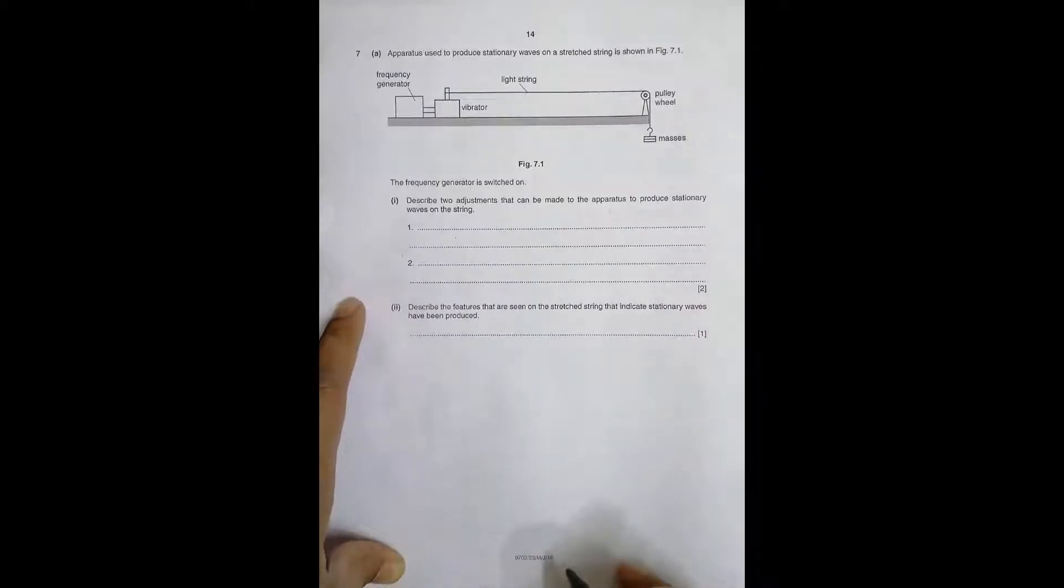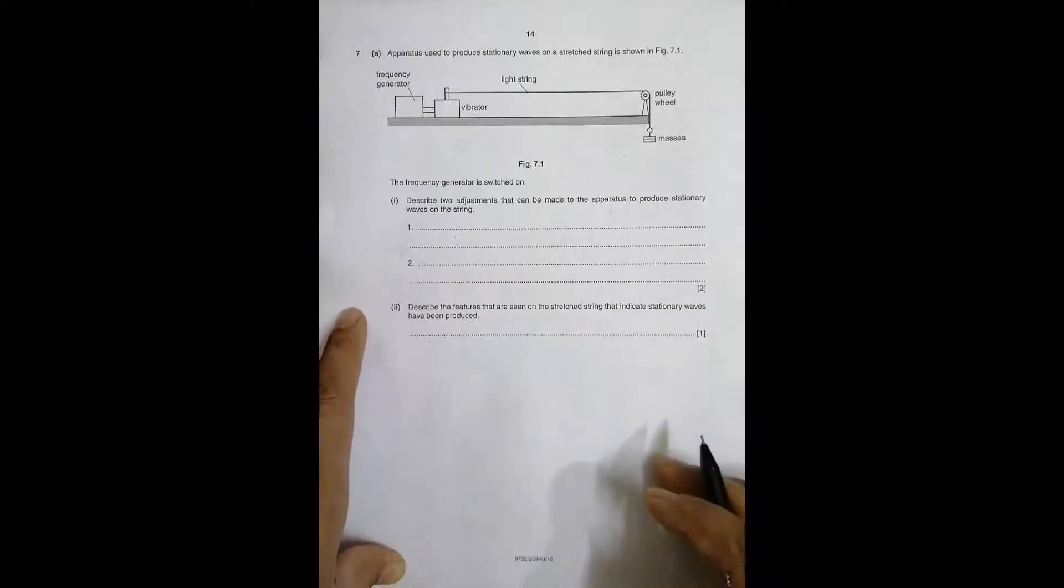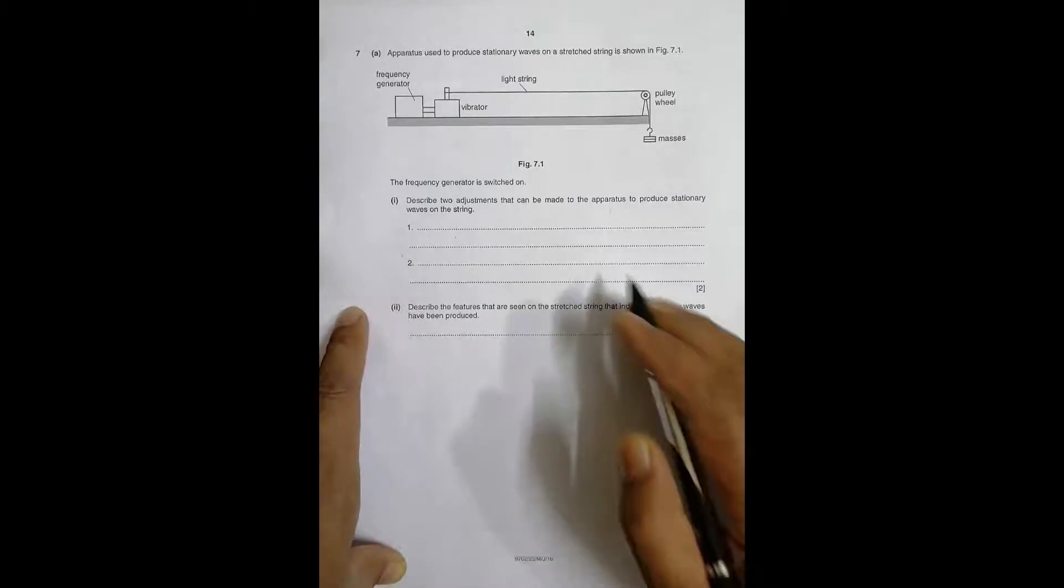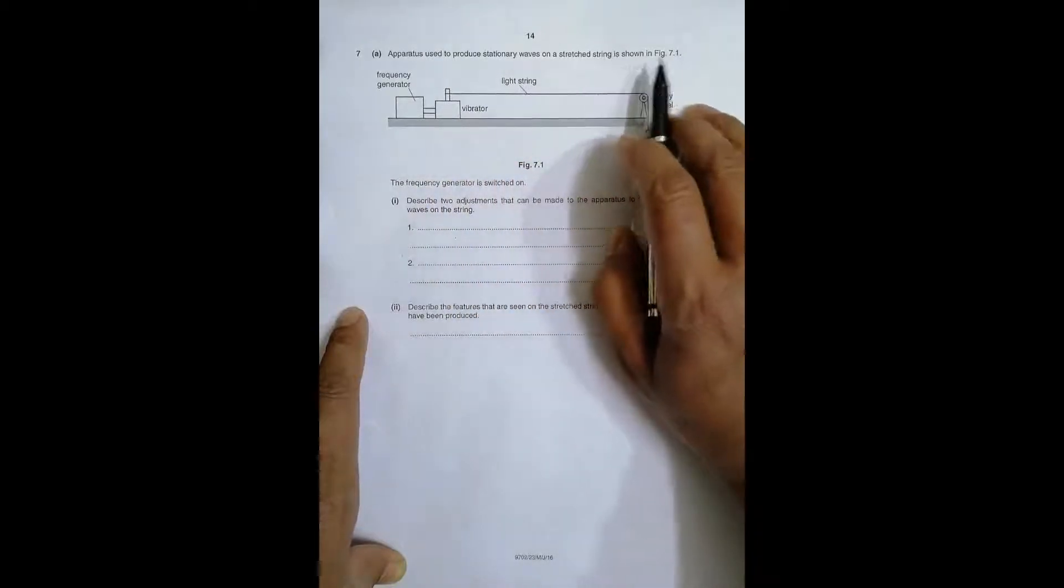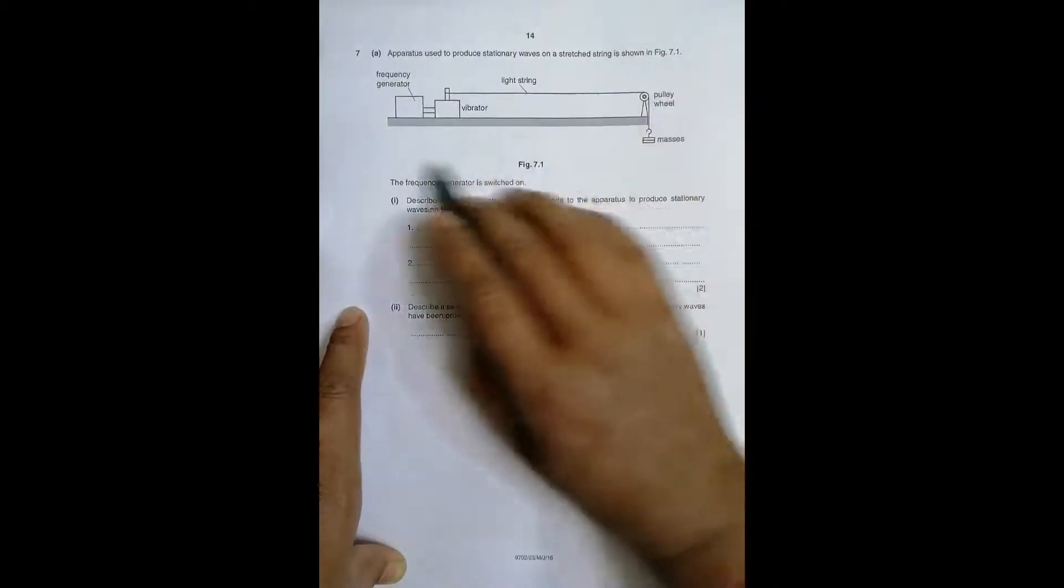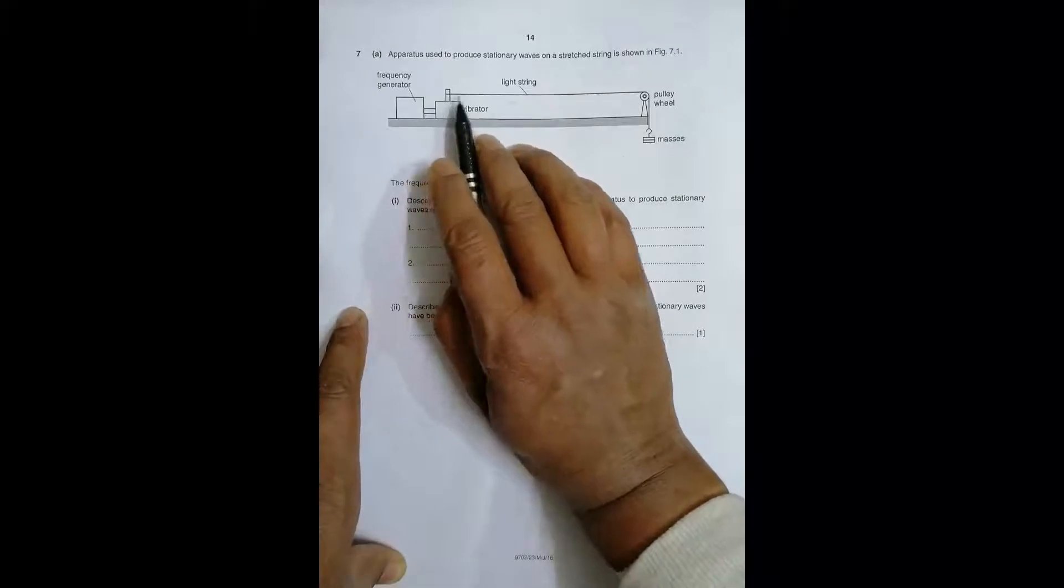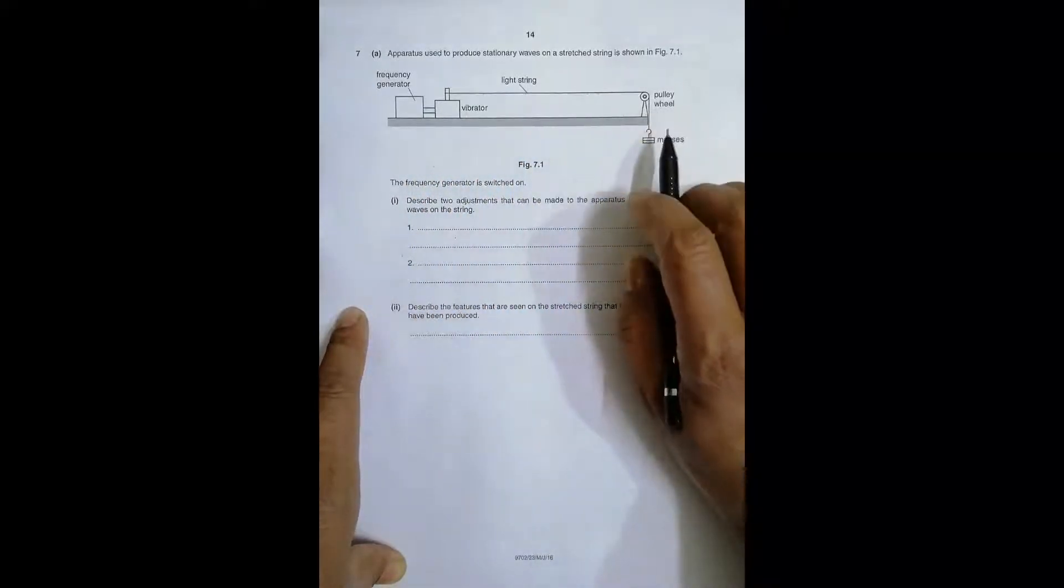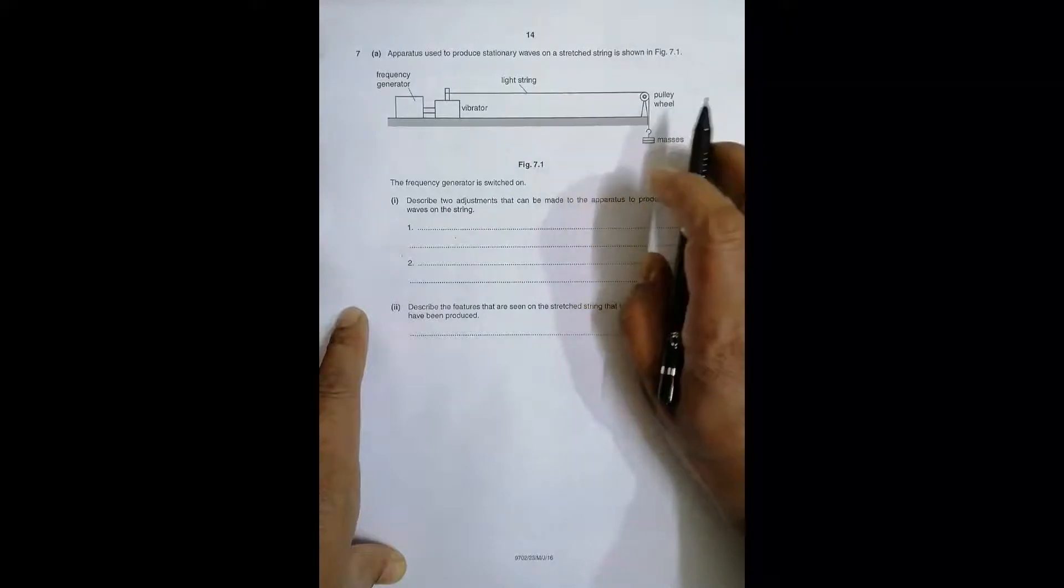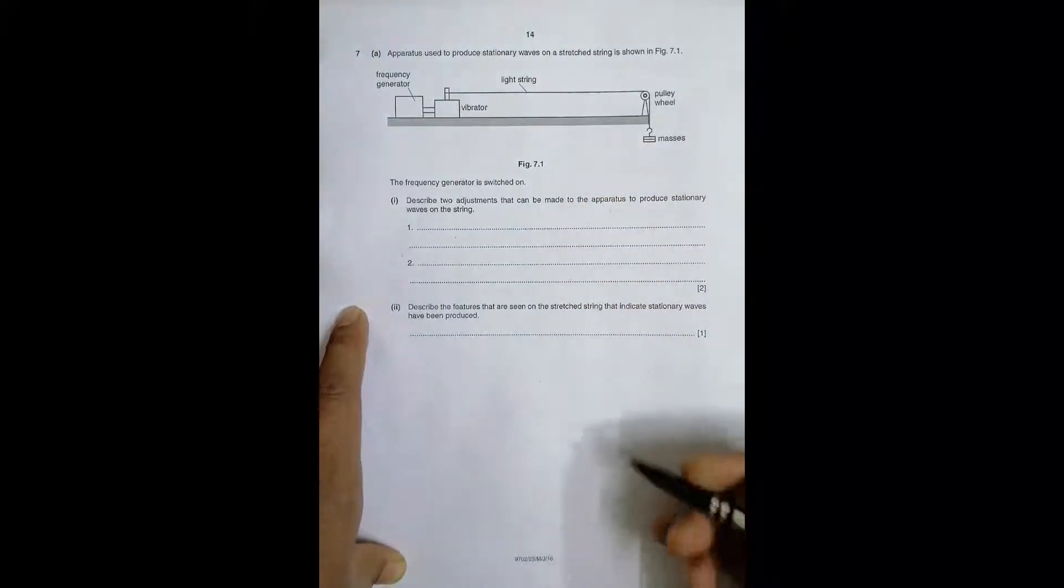Hello folks, this time I have got 2016 May paper 23, question number 7. It is concerned with the chapter on waves and superposition. It says a vibrator is used to produce transverse waves on a stretched string. The string is shown in figure 7.1. We have the vibrator generator, it vibrates and sets the string into motion. We have a pulley and we have masses. The masses give it some tension.